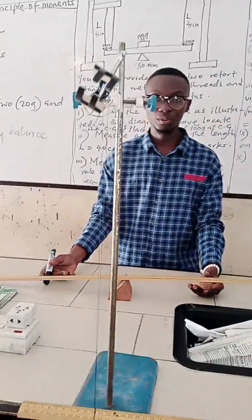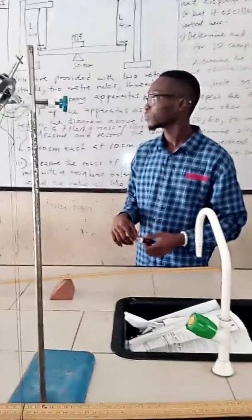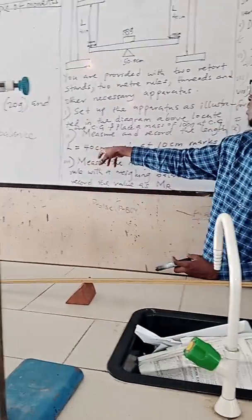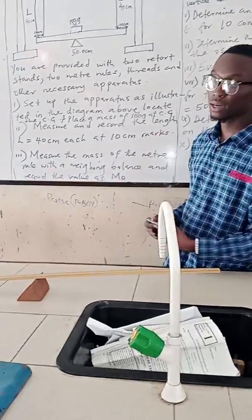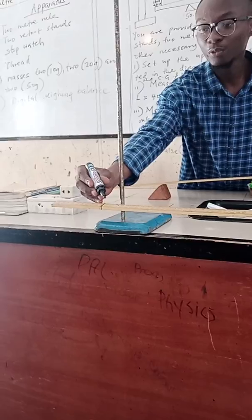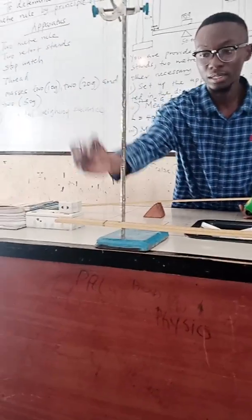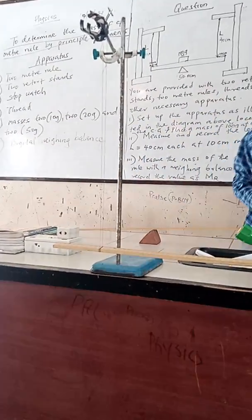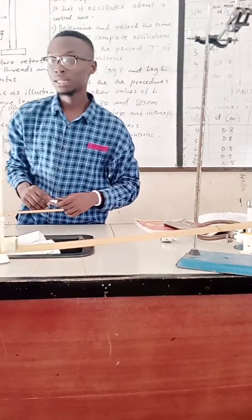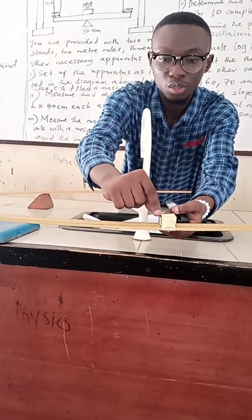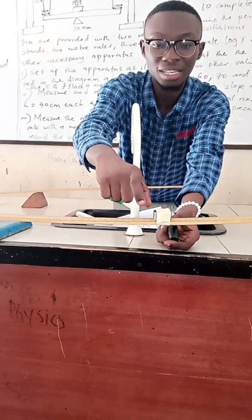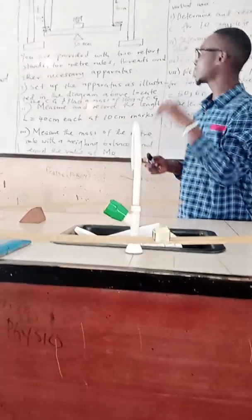They say we should measure and record the length L of 40 cm each at the 10 cm mark. So from here to this point is 10 cm, and that is where you are going to fix your thread, 10 cm away. Then from here to here is also 10 cm away, that is where you are going to fix your thread also. And the center of gravity, this is a mass of 100 grams being placed at the center of gravity, which is at the 50 cm mark.